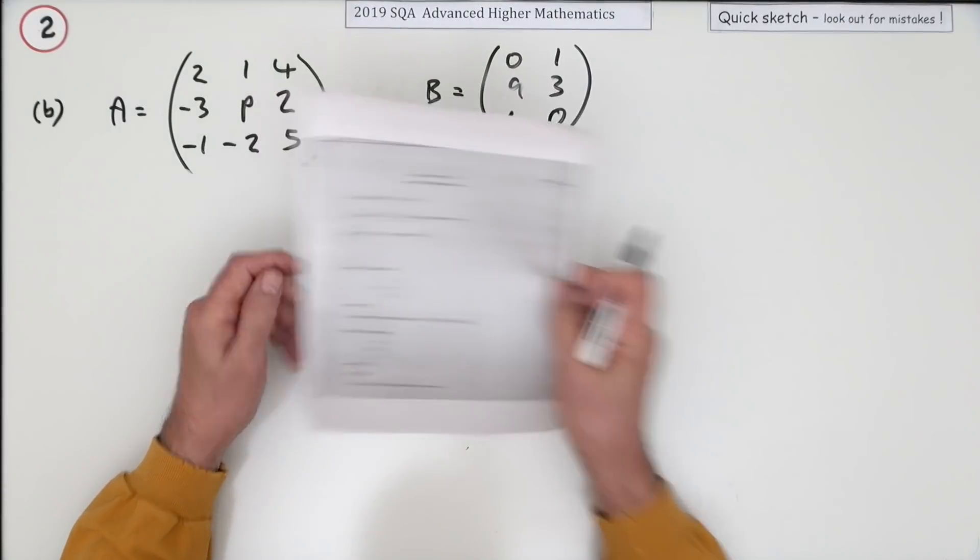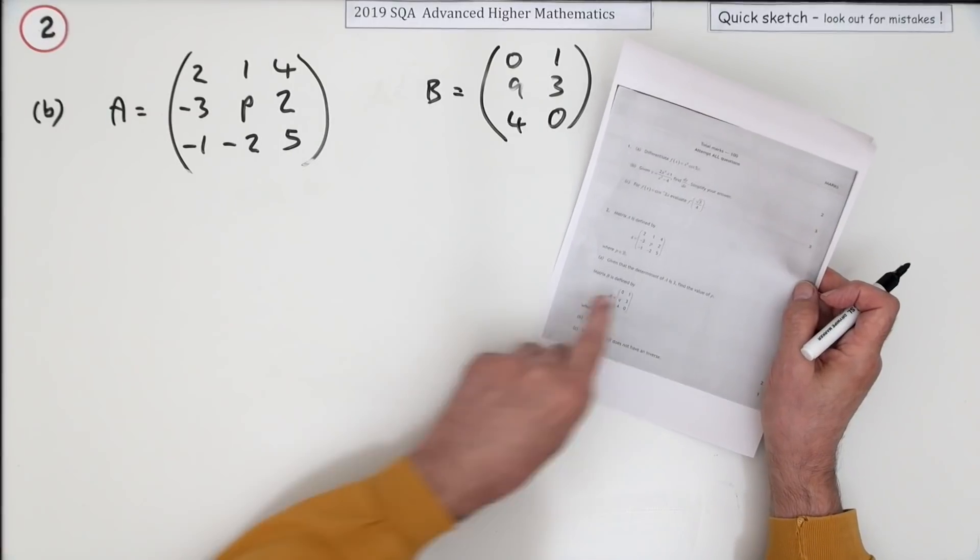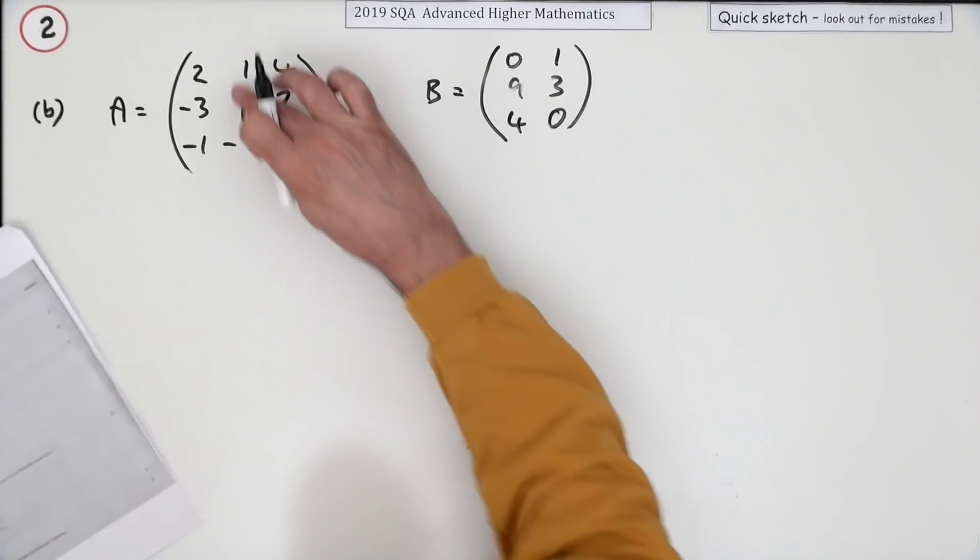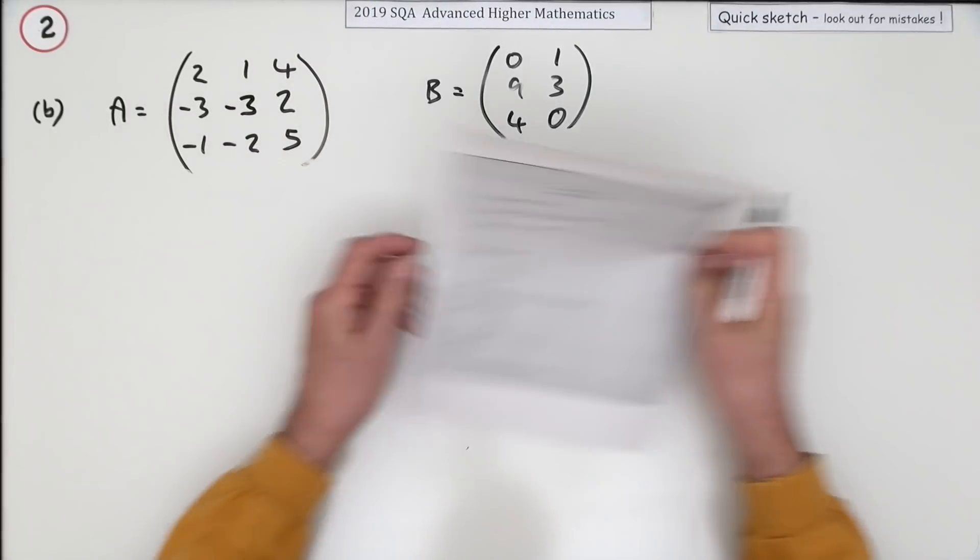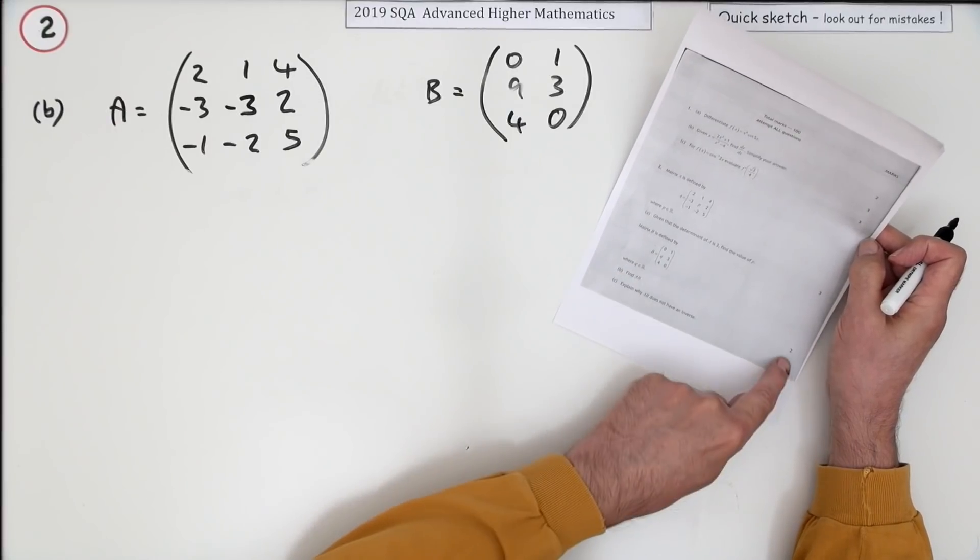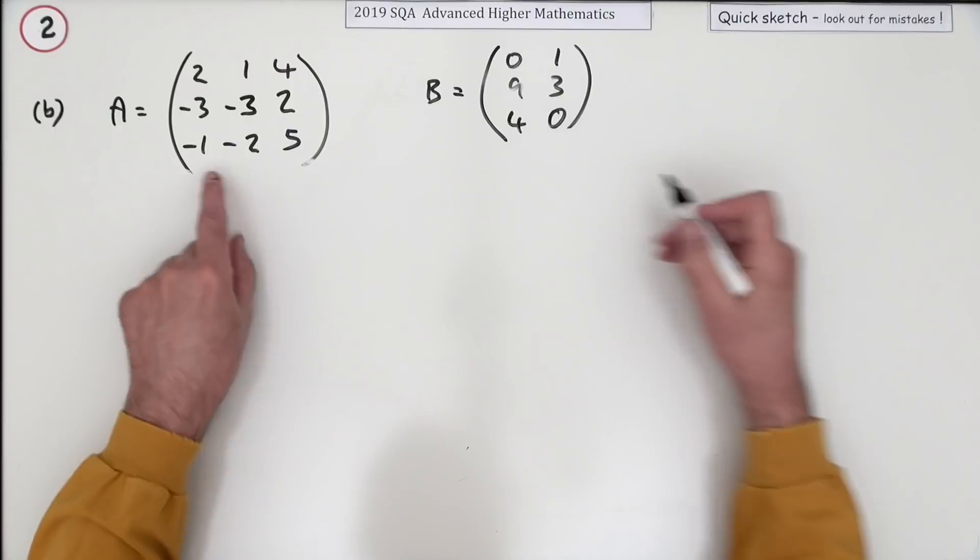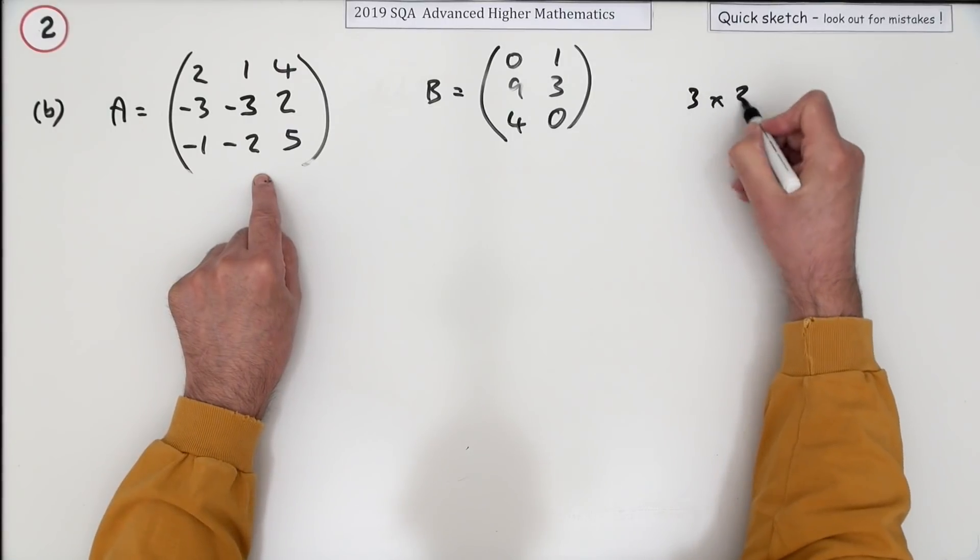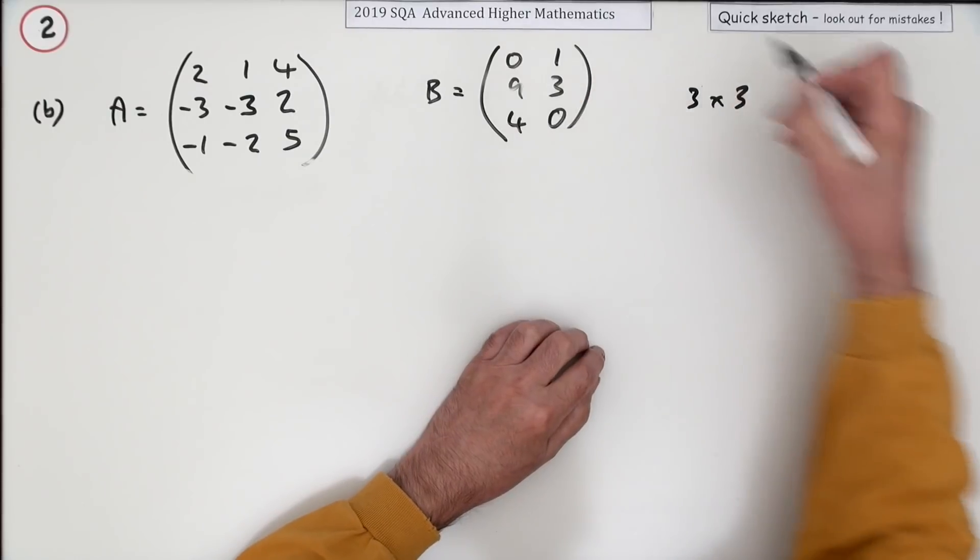Part B. Given this matrix with another unknown in it, although in the first bit since it said find the value of P, I presume that means we can now replace that P with a negative 3. So there's another matrix here and it says find for two marks just the product of these two. Well, they're compatible because that's a three by three matrix and that's a three by two matrix, rows times columns.